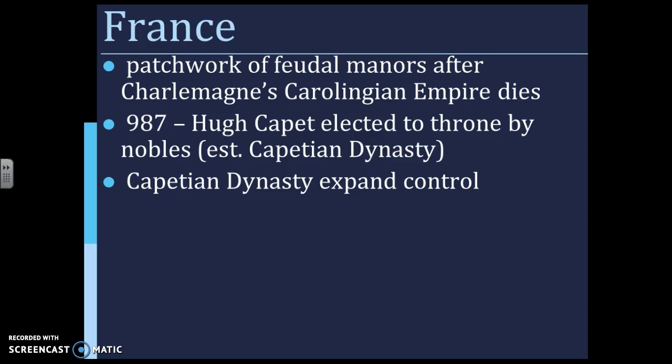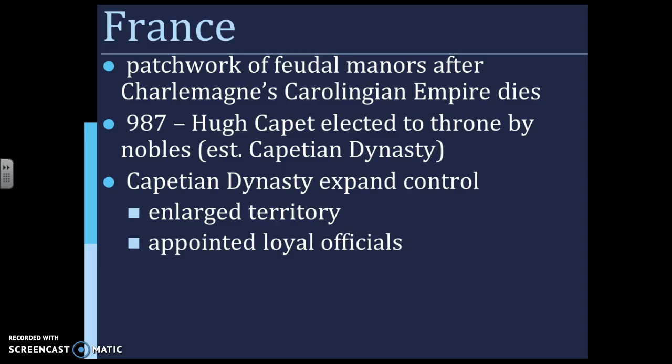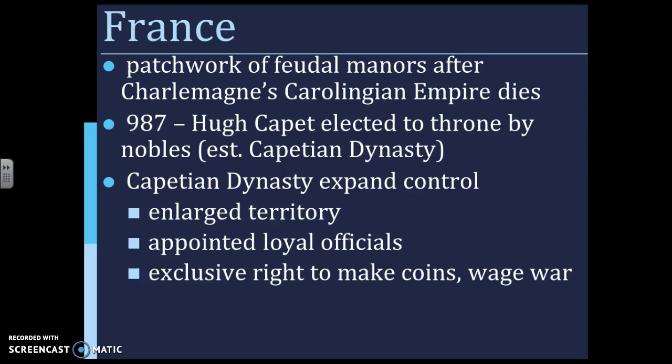The Capetian dynasty expanded control and established authority across what we know as France today. They had the power to appoint loyal officials to the crown, and they also won the exclusive right to mint coins. So they controlled trade and monetary policy in France, as well as the ability to wage war. This meant that nobles who used to fight each other could no longer legally do so — if they did, they would likely lose their territory to the king.